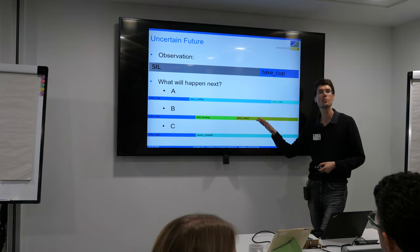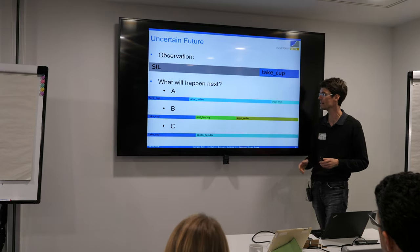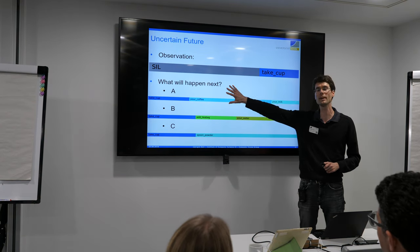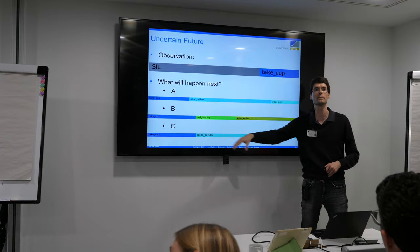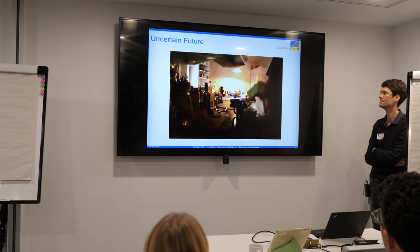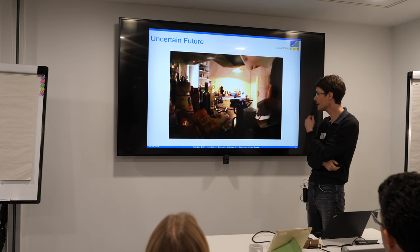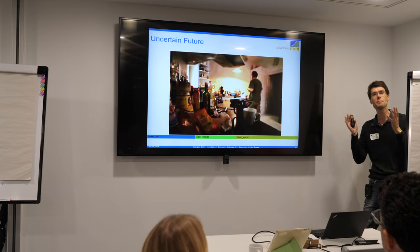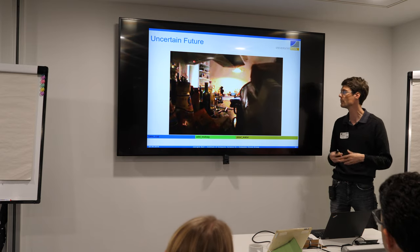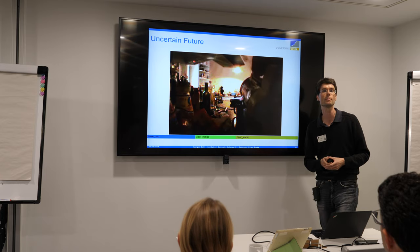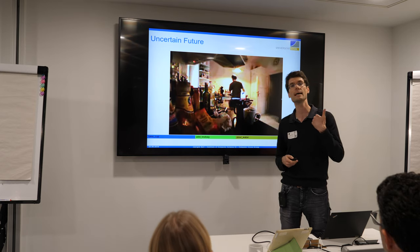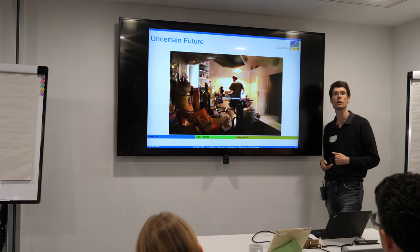The majority voted for coffee, some for tea, some for spoon powder — roughly half coffee, 25% tea, 25% hot chocolate. Let's see the video. It's actually tea. But technically, everyone was correct, because based on the available information we cannot really judge. We may have a prior for coffee, but this person preferred tea. This shows that the future is not unique and deterministic — sometimes we simply cannot judge what will happen next from the information given.